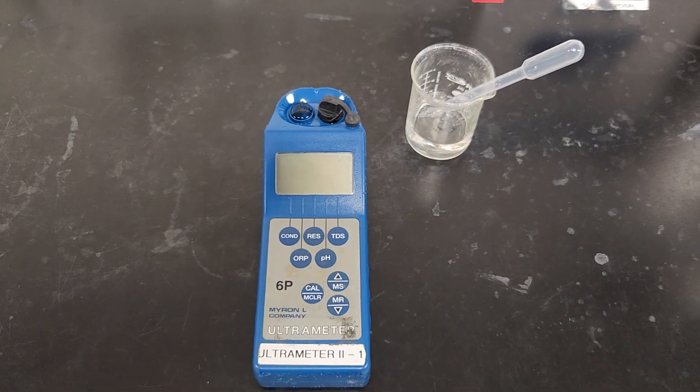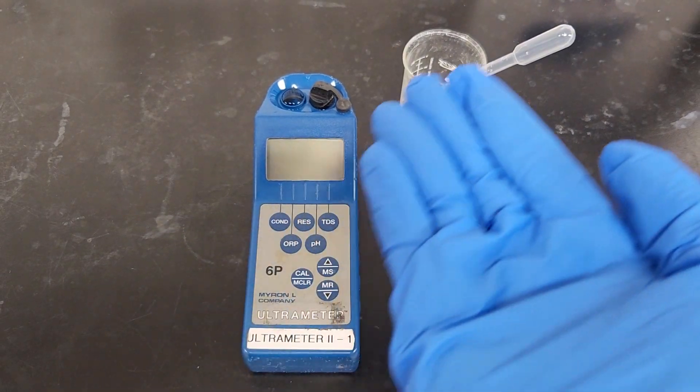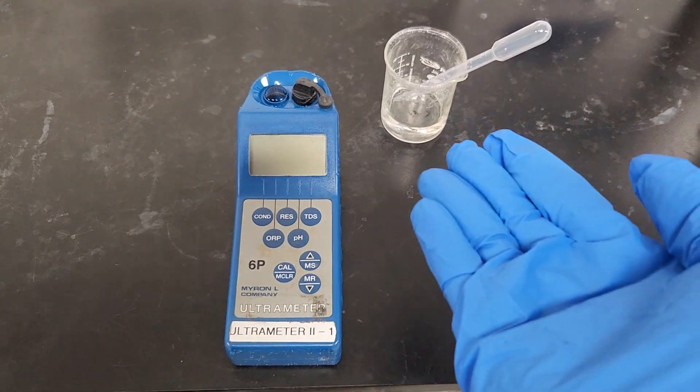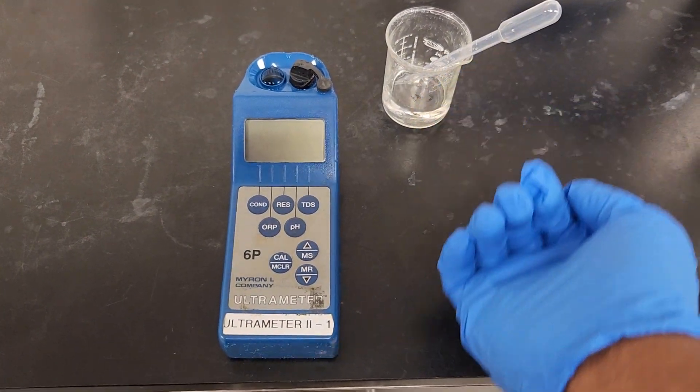Hi, in this video by the end of the day we'll be able to measure the conductivity of a sample and at the same time the total dissolved solid of a sample. So first of all, this is the sample. You use the sample to rinse the equipment three to four times before actually setting up the sample inside of it.